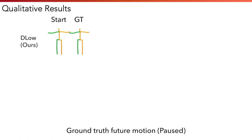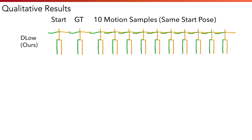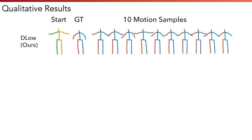Here we show some qualitative comparison of DLow against baselines. We show the past motion, ground truth future motion, and 10 motion samples for each method.